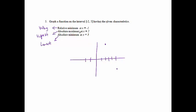We need a relative min at x = −1, so at negative 1 there's going to be a little valley. Drawing something like this — notice there is a valley at x = −1, the highest value is at x = 2, and the lowest value is at x = 5.